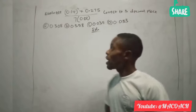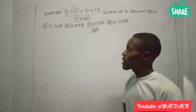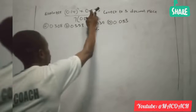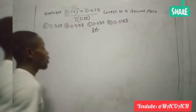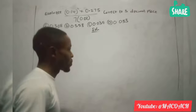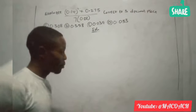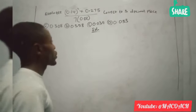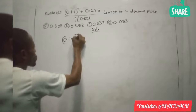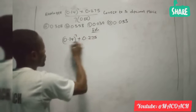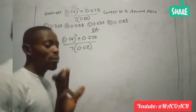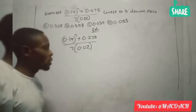We are in the JAM class now. In this video, we are going to evaluate 0.14 squared multiplied by 0.0275 divided by 7 times 0.02. We want to correct to a total of three decimal places. We have our options here. In JAM we always have options. Let's solve this particular question — it's very simple.